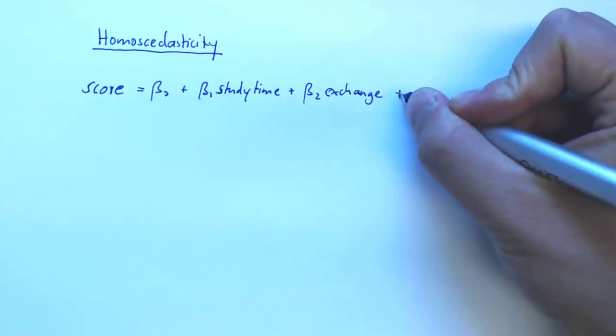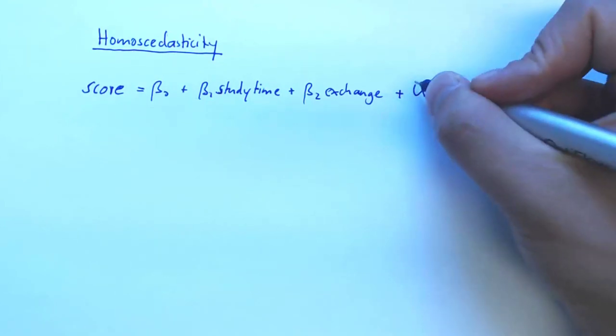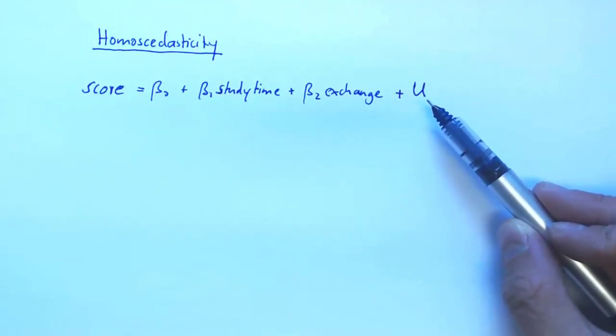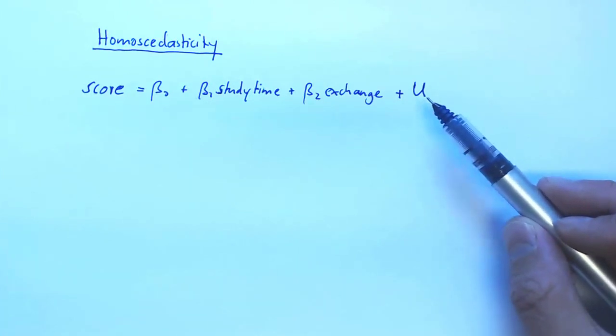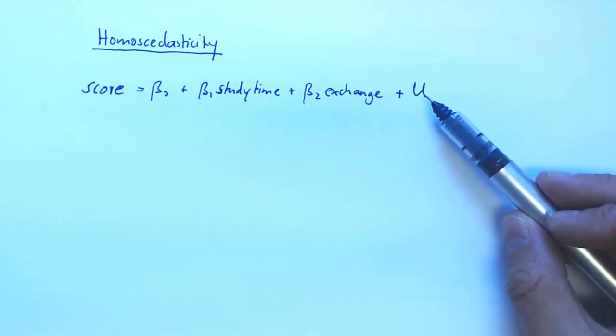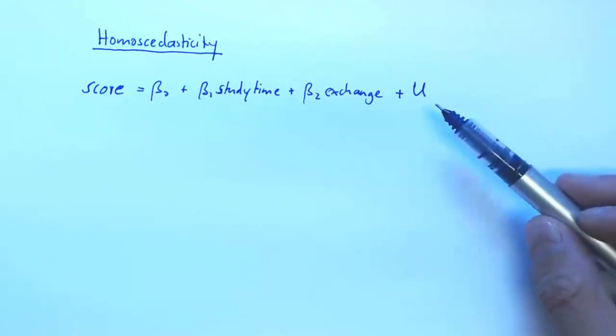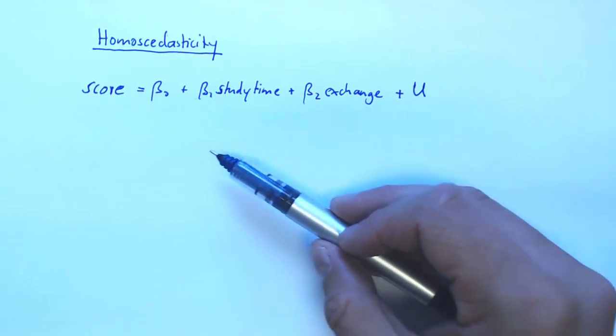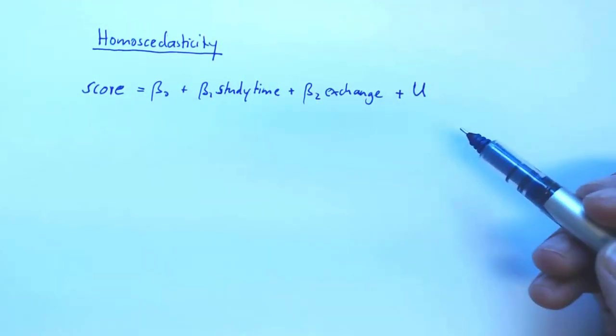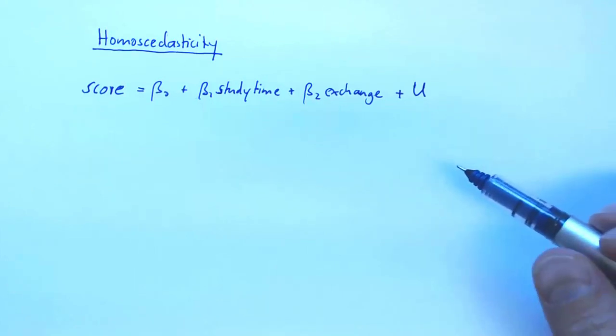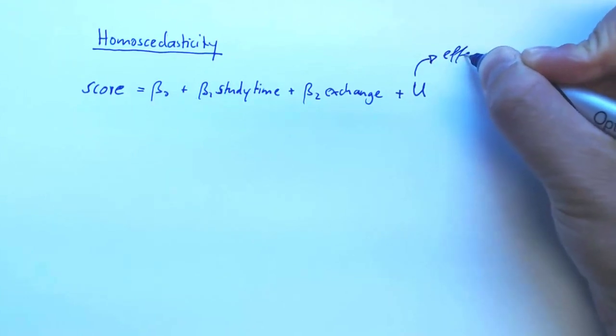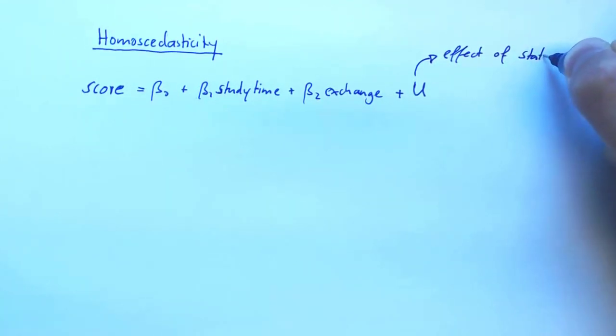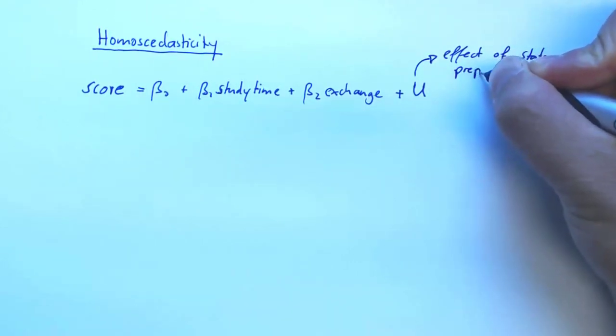And exchange is a dummy variable that takes the value one if you're an exchange student and the value zero otherwise. And of course we also have the unobserved component U and for the purpose of this example, let's just assume that U gives you the effect of statistics preparation. So it gives you the effect that previous statistics courses that you might've taken have on your exam score. So it kind of measures the effect of knowledge that you already have before you start the course on your score. So let's call it effect of stats preparation.